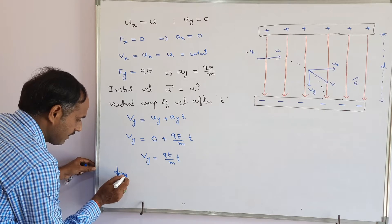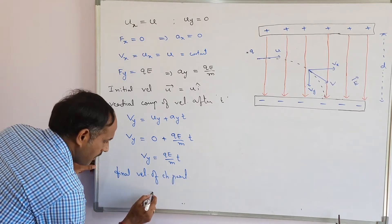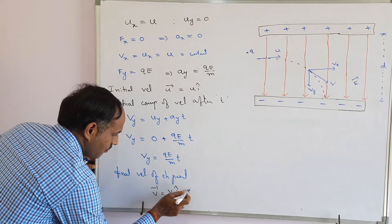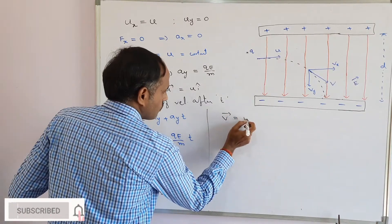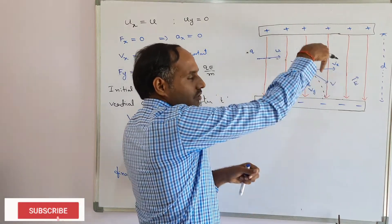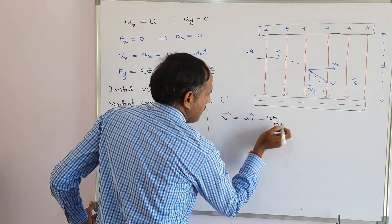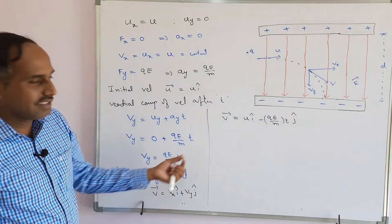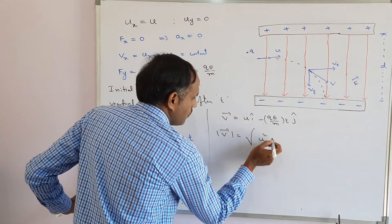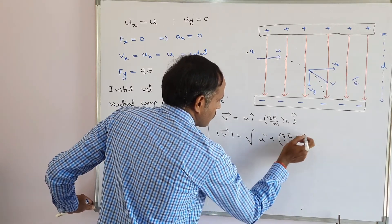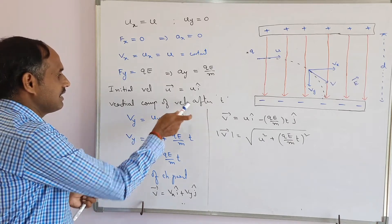The final velocity of the charged particle can be written as: v̄ = vx î + vy ĵ. Since vx = u (horizontal) and vy is directed downward, taking upward as positive and downward as negative: v̄ = u î − (qE/m)·t ĵ. The magnitude is |v̄| = √(u² + (qE·t/m)²). This gives the velocity and its magnitude after a certain time t.